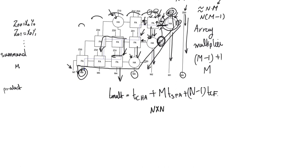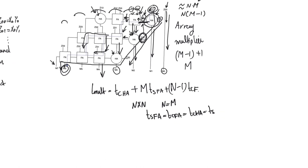To compare with an n-bit adder, consider an n×n multiplier where n = m. Making the simplifying assumption that T_sum(FA) = T_carry(FA) = T_carry(HA) = ts, then T_mult ≈ 2n·ts, while an n-bit adder under the same assumptions has delay n·ts. So the multiplier delay is roughly double that of a corresponding adder — and actually worse, since it includes many sum delays whereas the adder delay is mainly carry delays. Multipliers are generally at least twice as slow as adders of corresponding size.